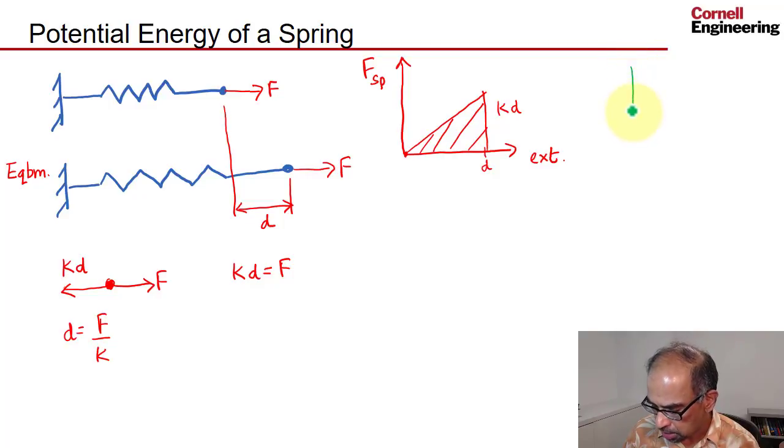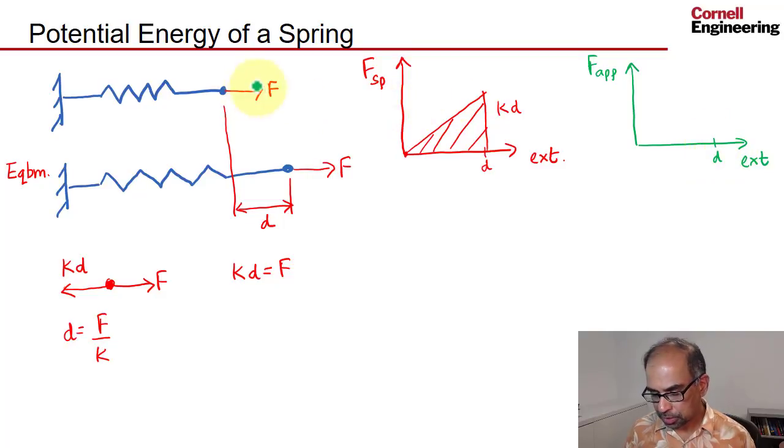Let me go to another plot. So here again, now I'm looking at the applied force versus extension. The extension, again, that's the same D, but we assume that the external force is applied instantaneously, so it stays constant, something like that. The area under that curve is that.